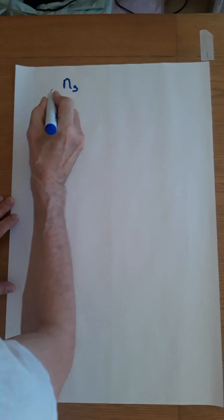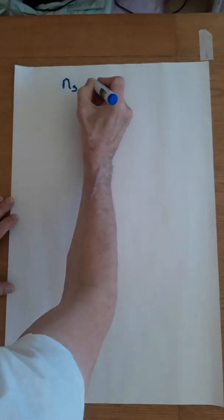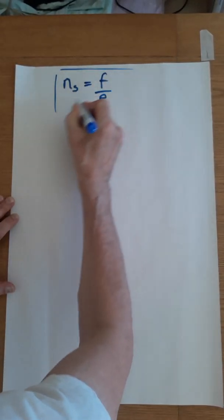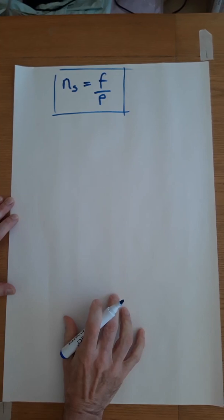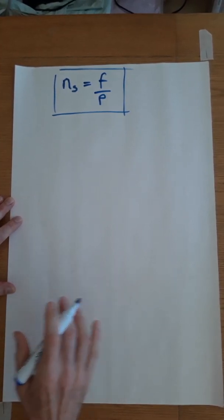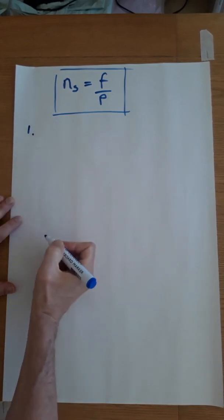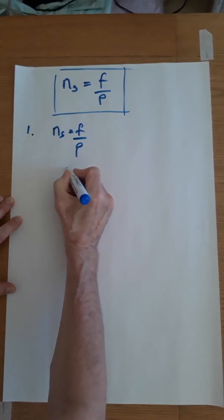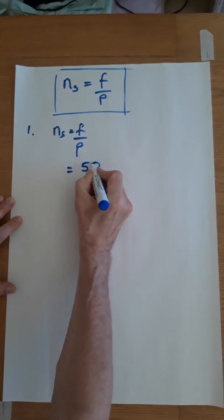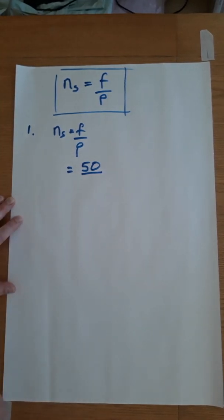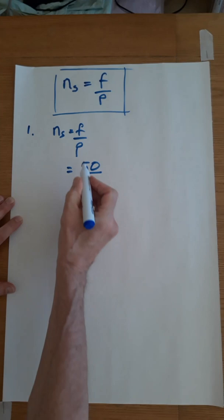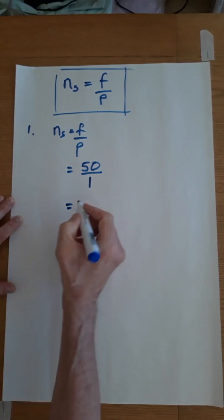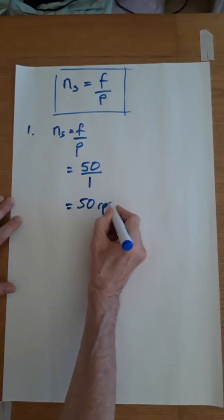We can work it out in revs per second — lowercase n is revs per second and it's f over p. Example one: ns = f over p, the frequency is 50 and it is a two pole machine. P is pairs of poles, so there is one pair — that would be a trip up if this question occurs in an exam. So that gives 50 revs per second.